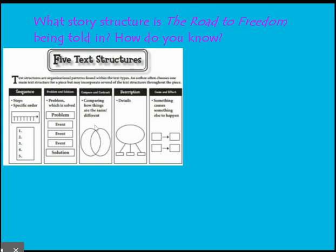Comparing and contrasting would require two different characters' points of view, and right now the only point of view we're hearing — because I know her thoughts and feelings — is Emma's. There's not a description of one big major event, because we have multiple events throughout the chapter, so description doesn't fit. And cause and effect didn't have enough events in this chapter — we had one major event: the slave catchers. So in that case, sequential order is what fits. We are knowing the sequence of events from one character's point of view.